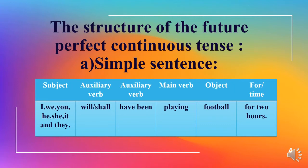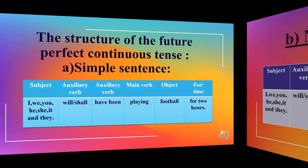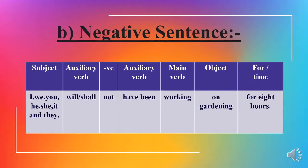Jab bhi mustakbilan mukamale jari ke sada jumle banane lagein toh yeh tarika kar madd-e-nazar rakhein: sab se pehle subject lagate hain jiasse I, we, you, he, she, it, and they. Iske baad doh auxiliary verbs lagate hain jiasse will aur have been. Iske baad main verb lagate hain jiasse 'playing,' aur phir object lagate hain jiasse 'football,' aur aakhir mein 'for' aur time lagate hain jiasse 'for two hours.'